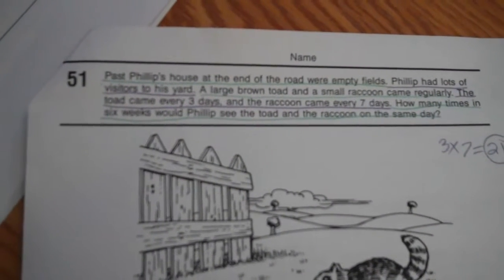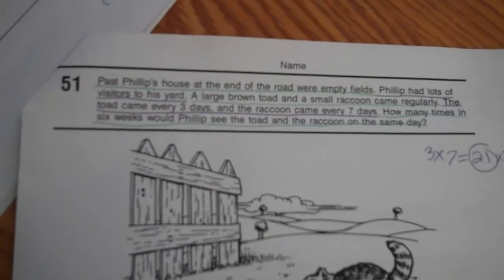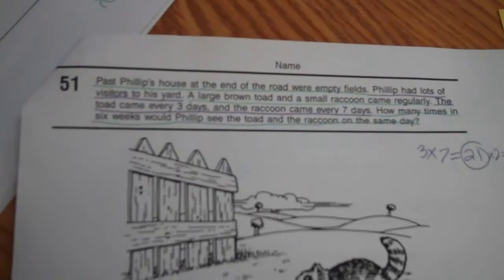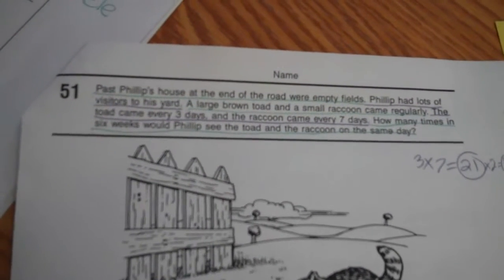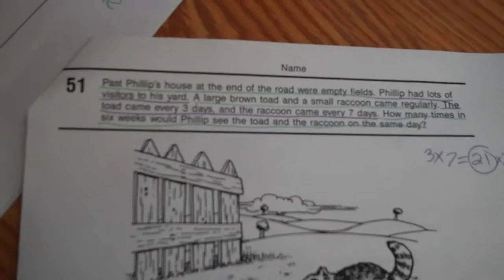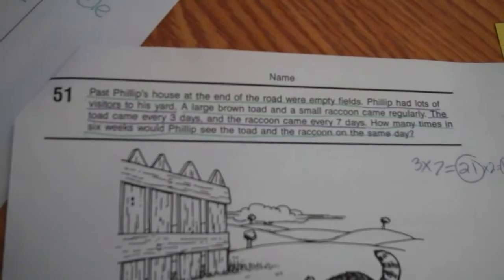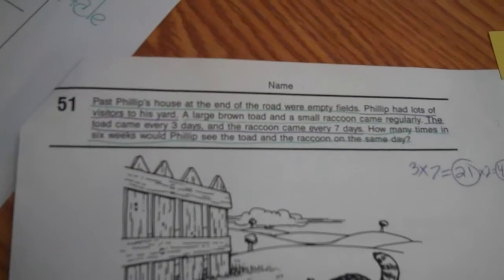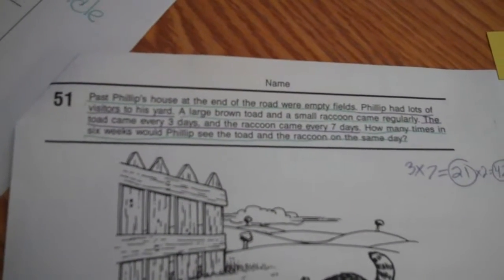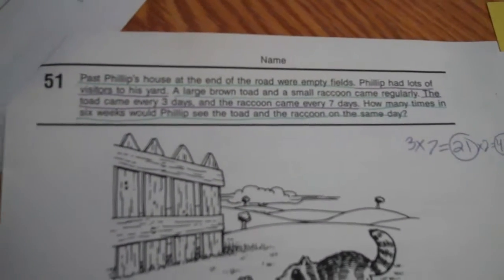Past Phillip's house at the end of the road were empty fields. Phillip had lots of visitors in his yard. A large brown toad and a small raccoon came regularly. The toad came every three days, and the raccoon came every seven days. How many times in six weeks did Phillip see the toad and the raccoon on the same days?